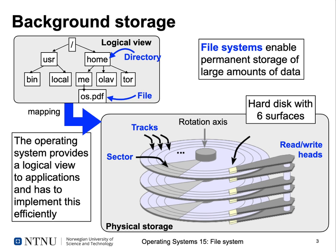A file system is a logical view of all the data in the blocks on your disk. File systems enable permanent storage of large amounts of data. For a file system you have a logical view like this — usually a tree structure where at the root you have several top-level directories like user or home. You can recurse down, having directories inside directories, and inside directories you can have files which contain data you'll work with like a PDF file. The task of the file system is to map this logical view into a physical view of your hard disk efficiently.